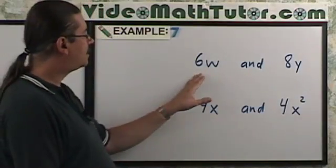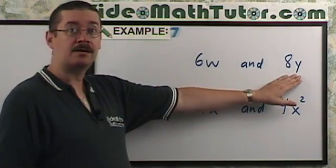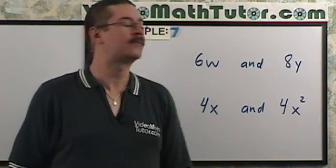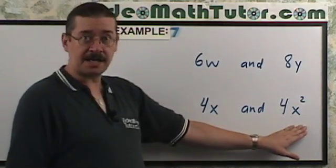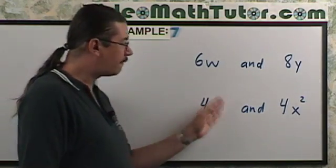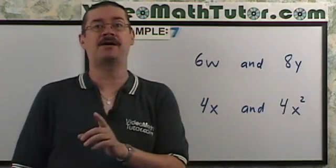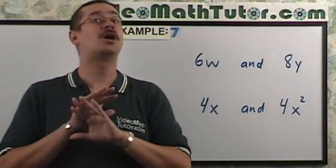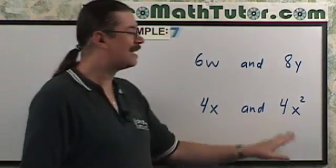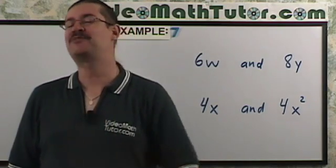Now, let's look at 6w and 8y. Are they like terms? Well, no, because the variables are different. And over here, the variables are the same, but one is just 4x to the first power. This is 4x to the second power. It's x squared. Those are not considered like terms. And again, the coefficient being the same is just to try to trick you. But I'm sure you didn't fall for that, did you?